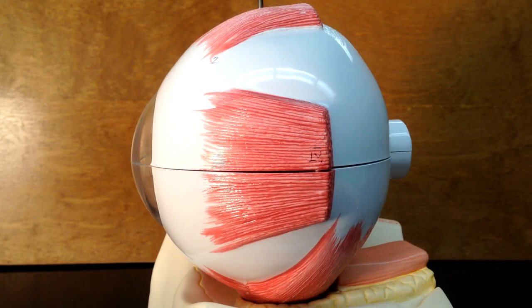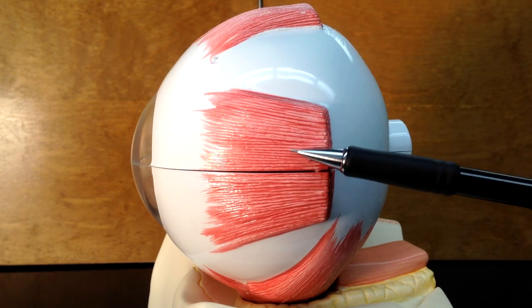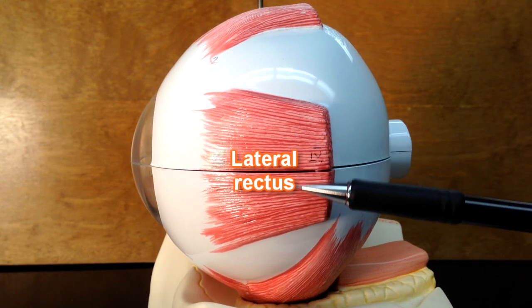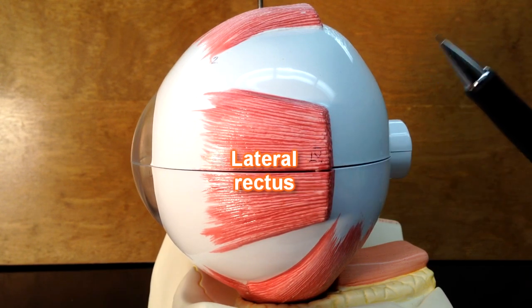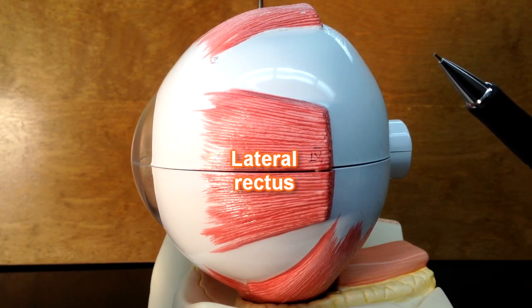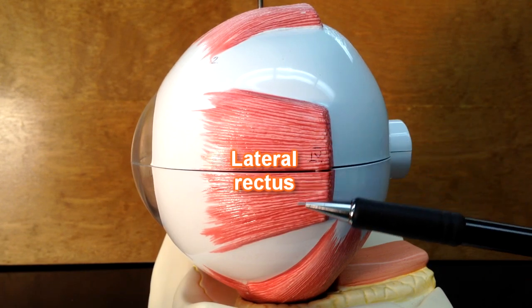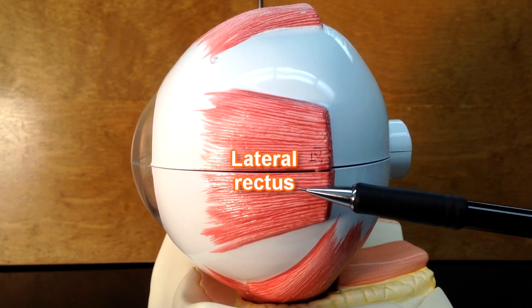One of the muscles we could see is this muscle right here, which would be the lateral rectus muscle. Remember the other side of the eye was the medial side where the tears drained into the nasal cavity. This is the lateral side, lateral rectus.